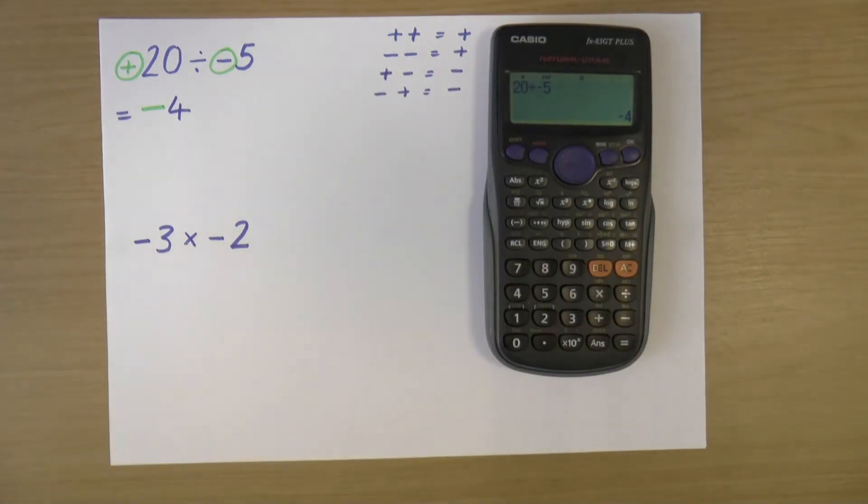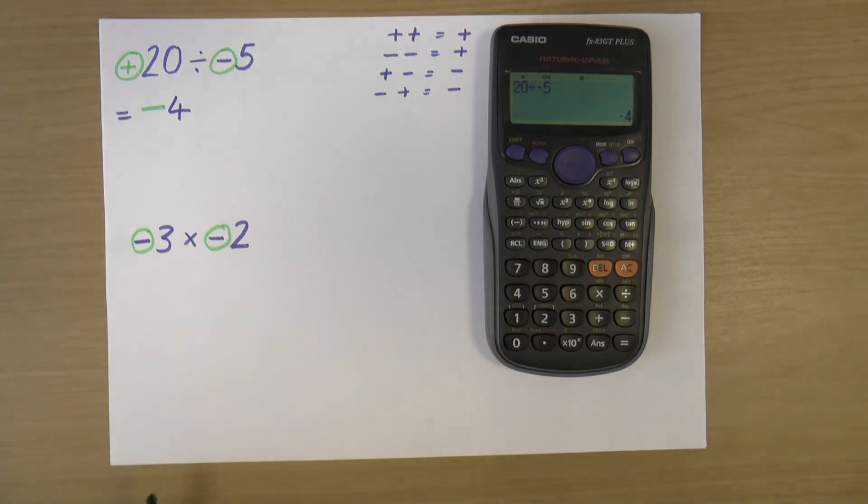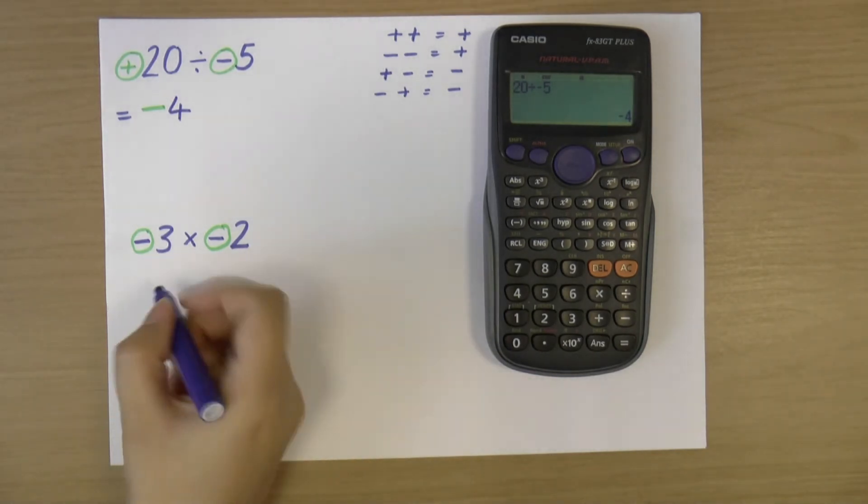So that's a division. Let's have a look at another one now for a multiplication. So we've got here minus three times minus two. So again, I'm looking at the symbols that are in front of the numbers. I've got two minuses here. Two minuses make a plus. Therefore, my final answer will be positive.